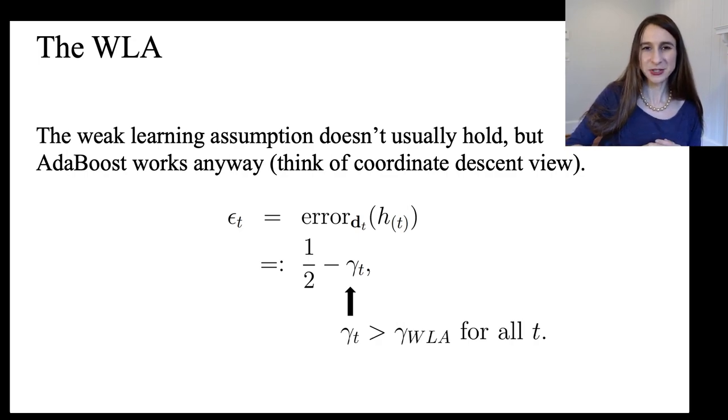And then the weak learning assumption is that gamma t at every iteration of AdaBoost is above gamma wla, right, gamma for the weak learning assumption. And that gamma wla, it's strictly above zero.